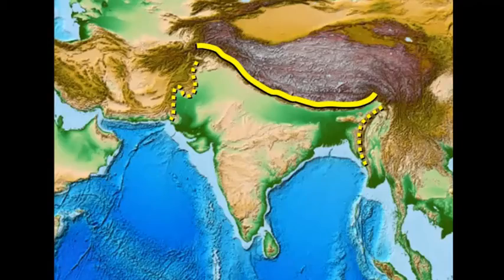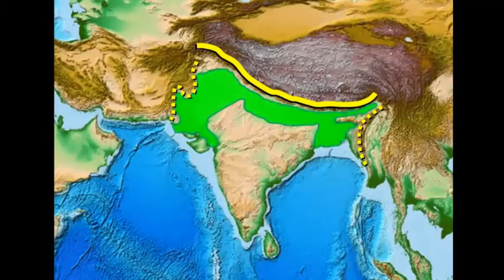Now let's look at some specific key landforms within South Asia beyond the Himalayan mountains. We also have the Indo-Gangetic Plain, which is the green area highlighted here. If we look at the topographic map underneath, we can see it's very, very flat. Because it's so flat in the Indo-Gangetic Plain, this is an area where we see a large amount of people living.